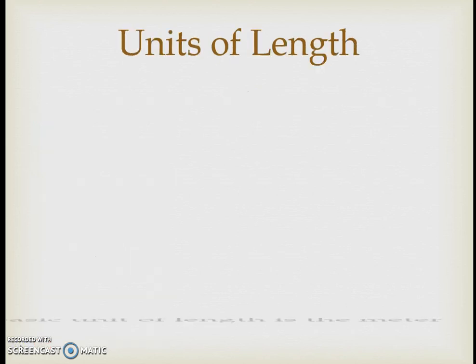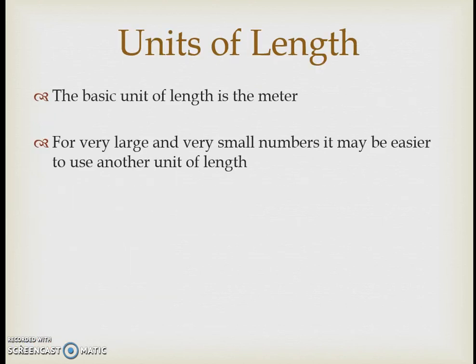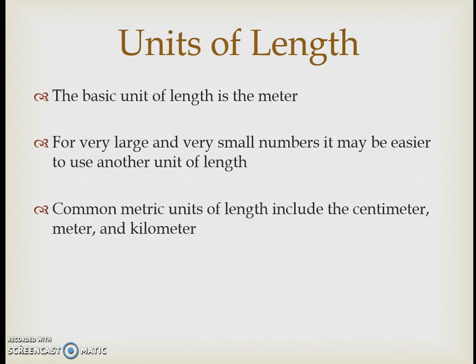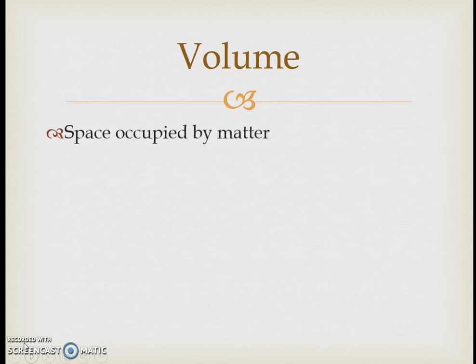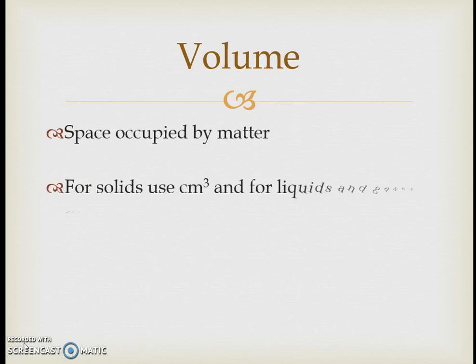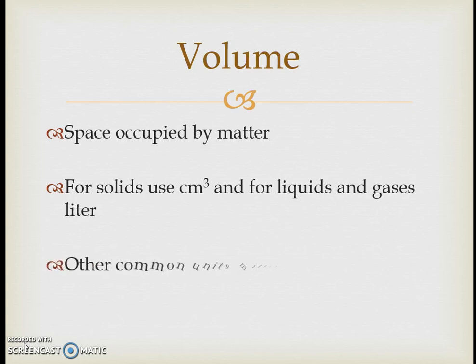Nano and pico are used less frequently but do come in handy in science. For length, the base unit is the meter, but other useful units include the centimeter, meter, and kilometer — you pick whichever prefix makes sense for the size of the measurement. In science we also often use volume, which is a derived SI unit representing three dimensions of length — length times width times height — describing how much space matter occupies. For solids we use cubic centimeters; for liquids and gases, liters.